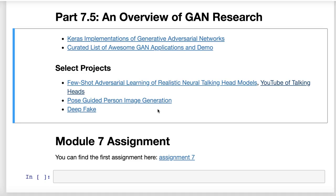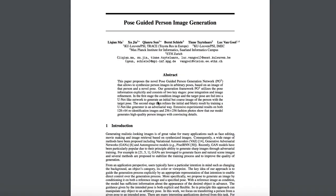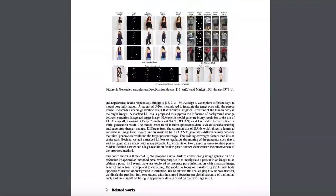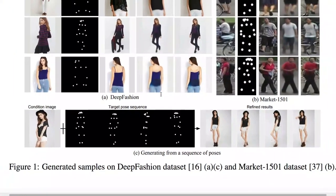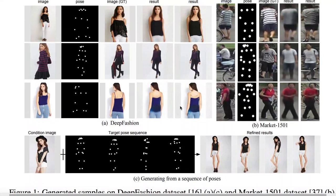Most GANs that you see deal really just with faces, but they're doing entire body-guided generation. This was a paper where they're able to generate entire bodies and also pose them according to specific landmark points. So you can now — I don't know — get the idea that neural networks are trying to put human models out of a job perhaps. But they can now generate entire body images based on the GAN.